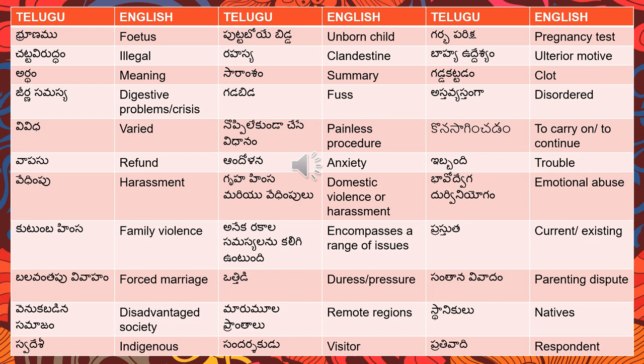'Clot' — rattam guttakatindi. 'Blood clot' — rattam guttakattindi. 'Digestive problems' or 'digestive crisis' — jeerna samasya; jeerna means digestion. 'Fuss' — gaavupetta; don't make so much fuss. 'Disorder' — papers are not in the right order, they are disordered — antakaitalani asthavyasthamga unnai.